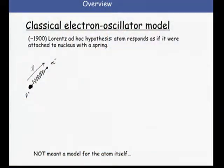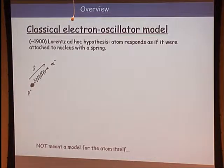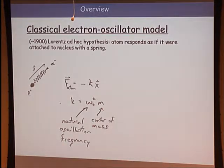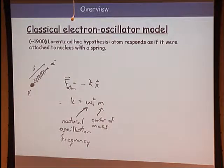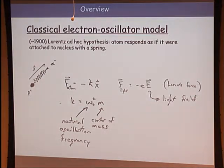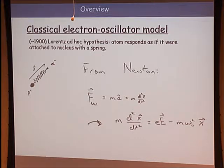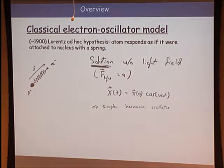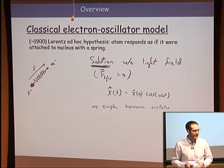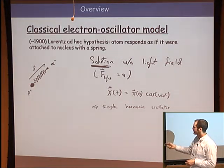Let's review the classical oscillator model by Lorentz. It's not a model for the atom—it's a model for light-matter interaction. We assume an electron attached by a spring to the proton. The only force on the electron is the spring, giving a linear displacement force characterized by spring constant k and a characteristic frequency. When we turn on the light field, we have a Lorentz force—the electromagnetic field interacting with that electron.